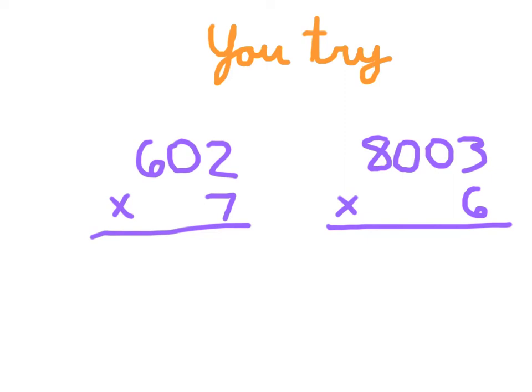For that first problem, 7 times 2 is 14. Write 4. Regroup the 1. 7 times 0 is 0. Plus 1 is 1. And 7 times 6, which is 42. Do write in your regroups as you are working through these problems.